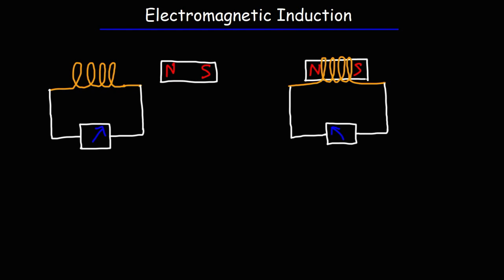In this video, we're going to focus on electromagnetism, specifically electromagnetic induction. Consider the circuit on the left. We have an inductor attached to an ammeter. An ammeter is a device that measures current. An inductor can be made simply by creating many coils of wire.